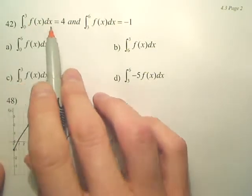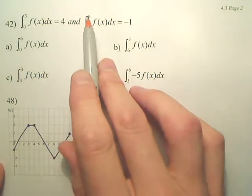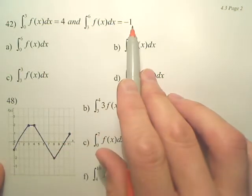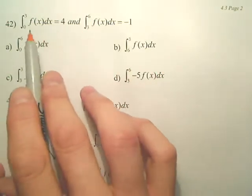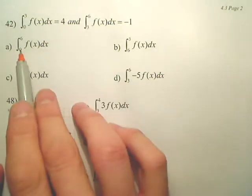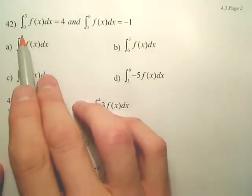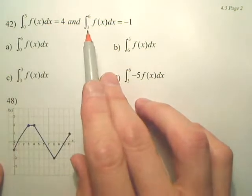From 0 to 3, the area of f(x) is 4. From 3 to 6, the area of f(x) is negative 1. It's the same function, just different intervals. So if we went from 0 to 6, wouldn't that just be from 0 to 3 plus 3 to 6?